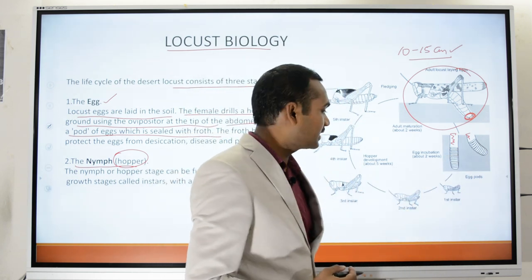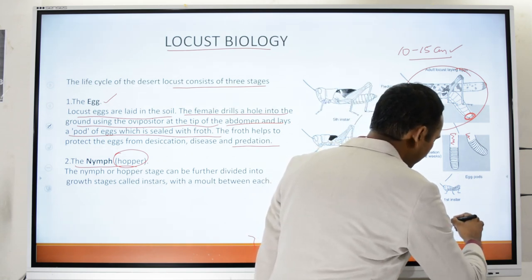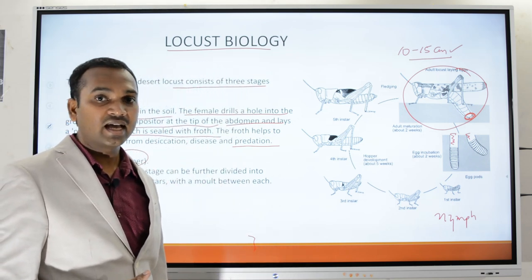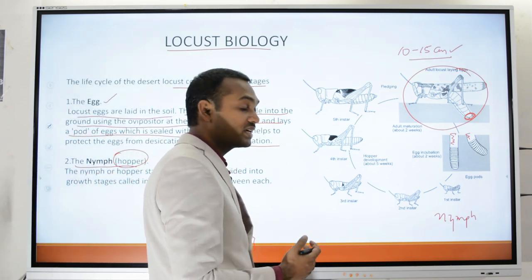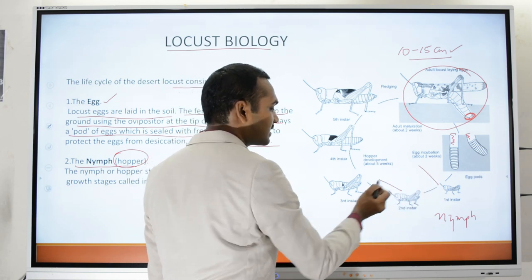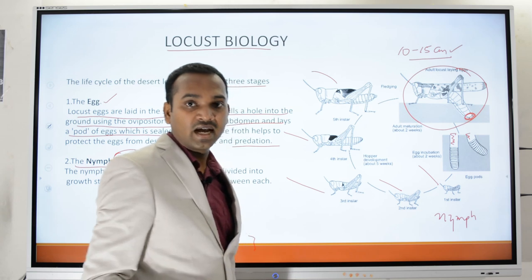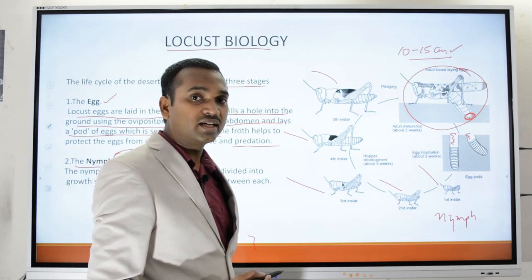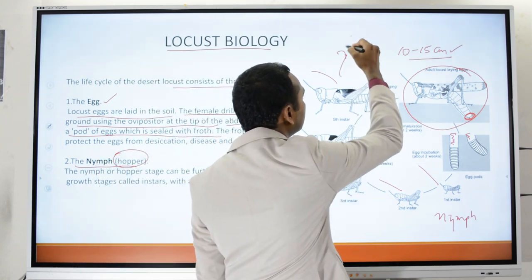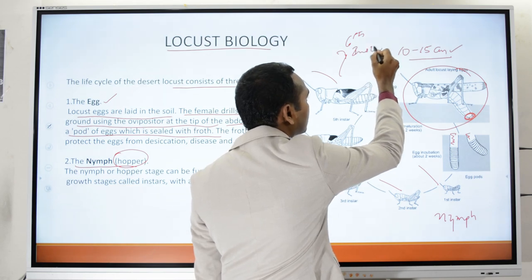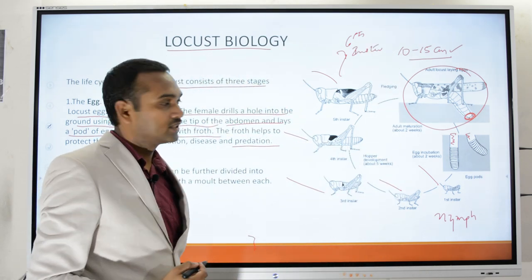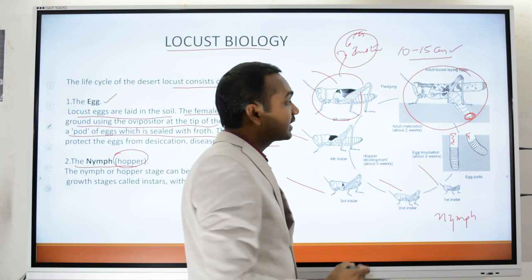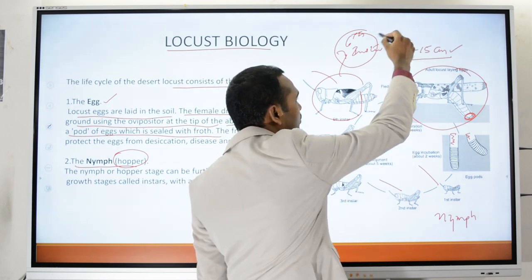Nymphs are categorized into different instars based on their developmental stages — first, second, third, fourth, and fifth instar. Five instars are present in the gregarious locust, whereas in the solitary locust there can be up to a sixth instar. Once the fifth or sixth instar is complete, the conversion into an adult requires molting — a process called fledging.